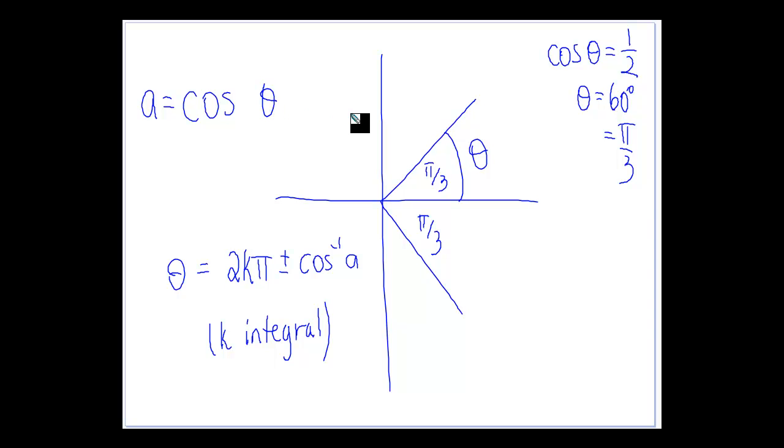So in this case what we want to do is find the general solution for cos θ equals one half. Now the idea with cos θ is that if it's positive, cos is positive in the first and the fourth quadrant.